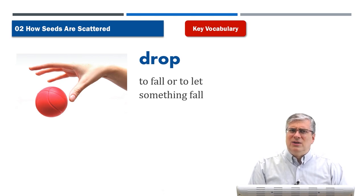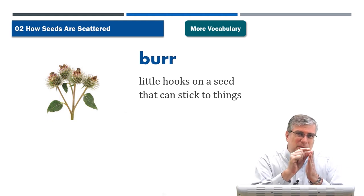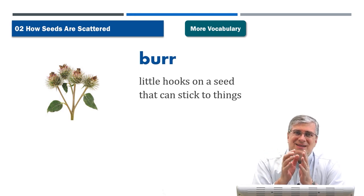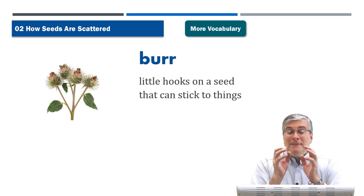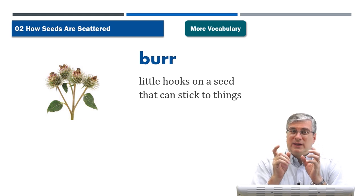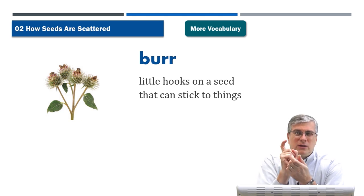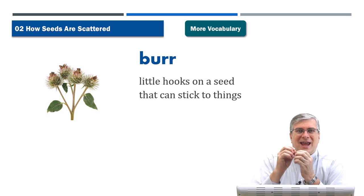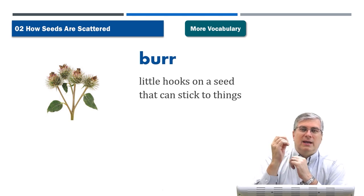'Burr' — remember those little pieces of plant that stick to your socks in the woods? Those are called burrs. A burr has little hooks on a seed that can stick to things. If you look at them carefully, especially with a magnifying glass, you can see tiny hook-like parts on the plant. Those hooks grab onto your clothing — especially socks and pants — and stick with you as you move.